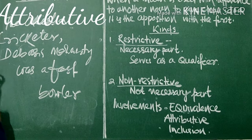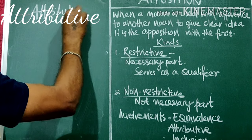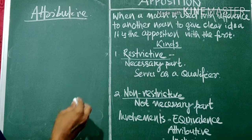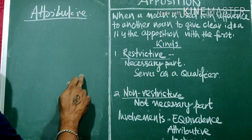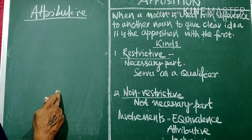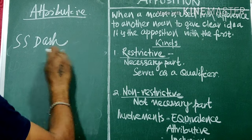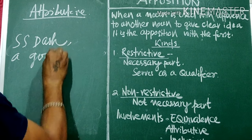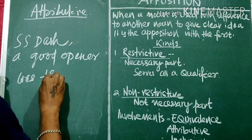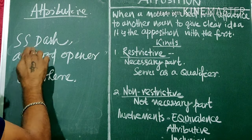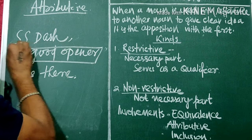The second category is attributive. Attributive means it is the quality of the first noun — the second Apposition describes a quality of the first. For example: 'S.S. Das, a good opener, was there.' That is, Sivashankar Das, a good opener, was there. 'A good opener' is the quality of the first Apposition. This is called attributive.